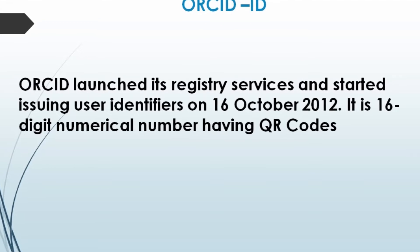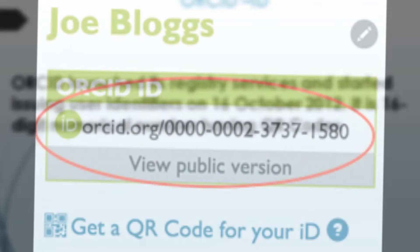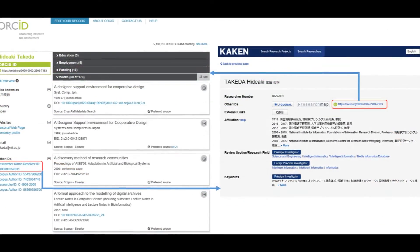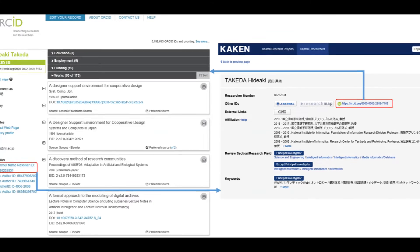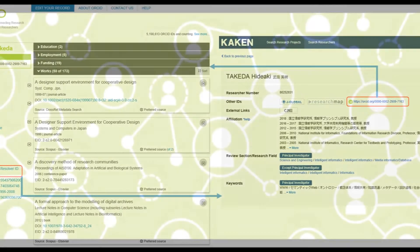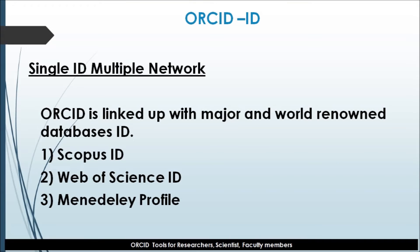ORCID is a 16-digit numeric code issued to researchers, scientists, and scholars. ORCID ID is linked with major world-renowned databases, including Scopus ID, Web of Science Researcher ID, and Mendeley profile. Through a single profile, you can search an author's contributions, citations, and h-index across various platforms like Scopus, Mendeley, and Web of Science.